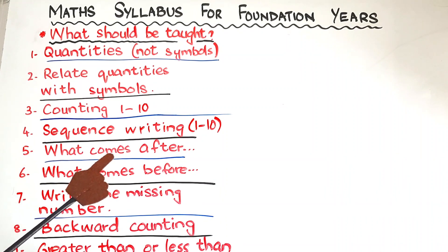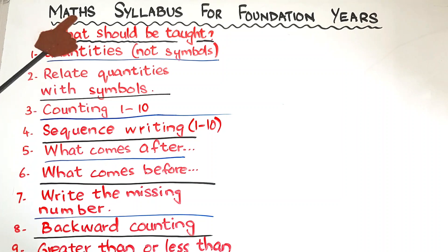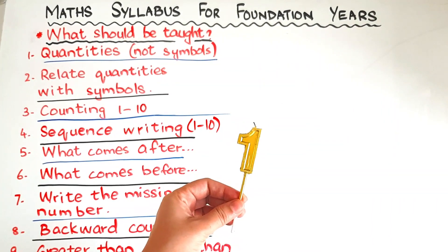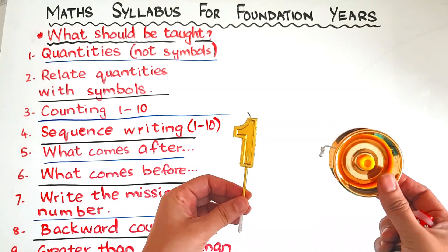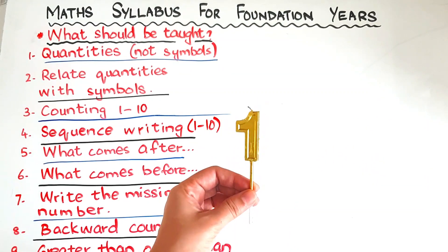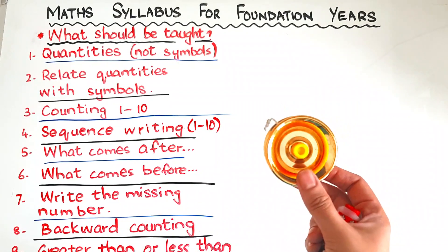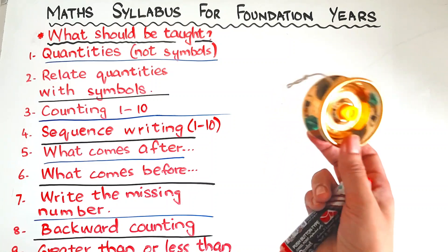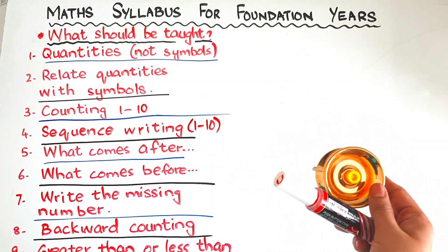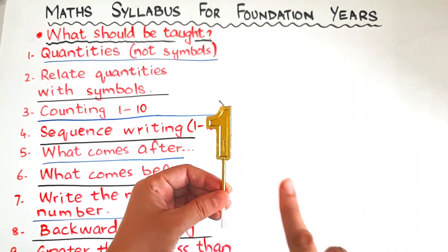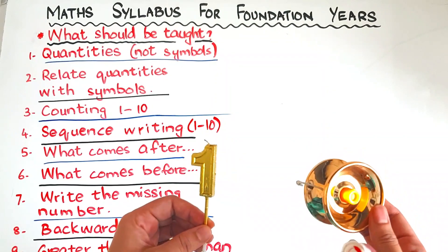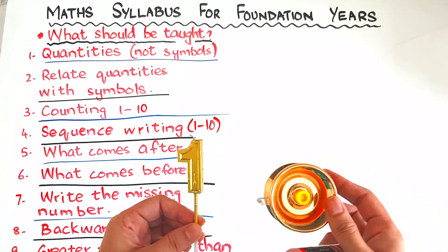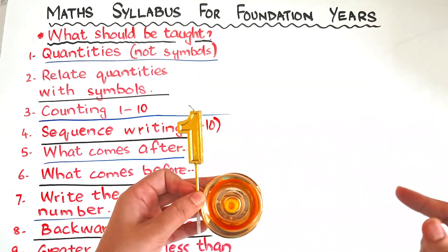This is the first course you will be teaching your kids, no matter their age, if they are new to math and you are introducing it in a systematic way. By 'introduce quantities not symbols' — for example, this is the symbol for number one, and this is the quantity for number one: one yoyo. Introduce the quantity first. Show them different objects that are only one in number — one yoyo, one marker, one pencil, one pen — and then introduce the symbol.